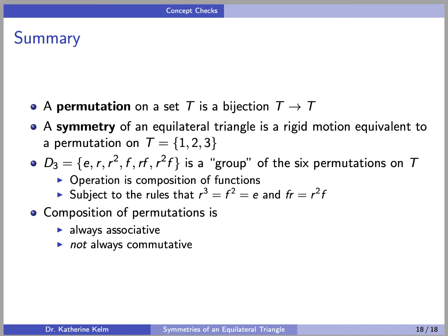Where the six elements are E, R, R squared, F, RF, and R squared F. The operation is composition of functions. And this group is subject to the rules that R cubed equals F squared equals E, and FR equals R squared F. And we note that composition of permutations is always associative, but not always commutative. I hope you found this video helpful.